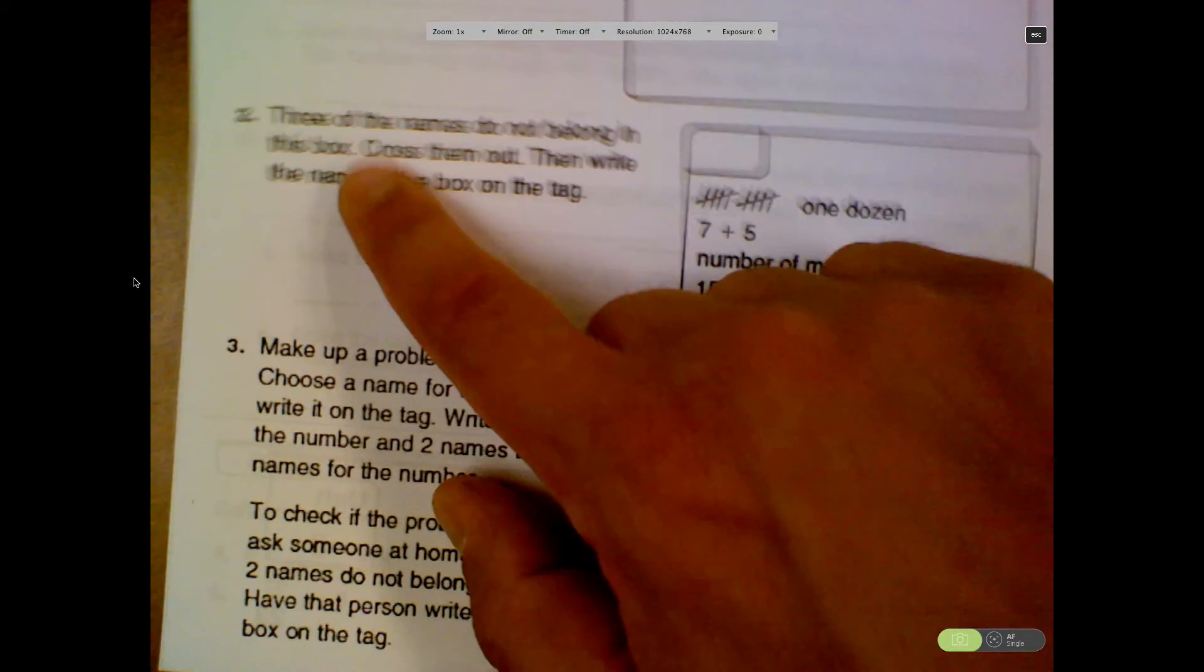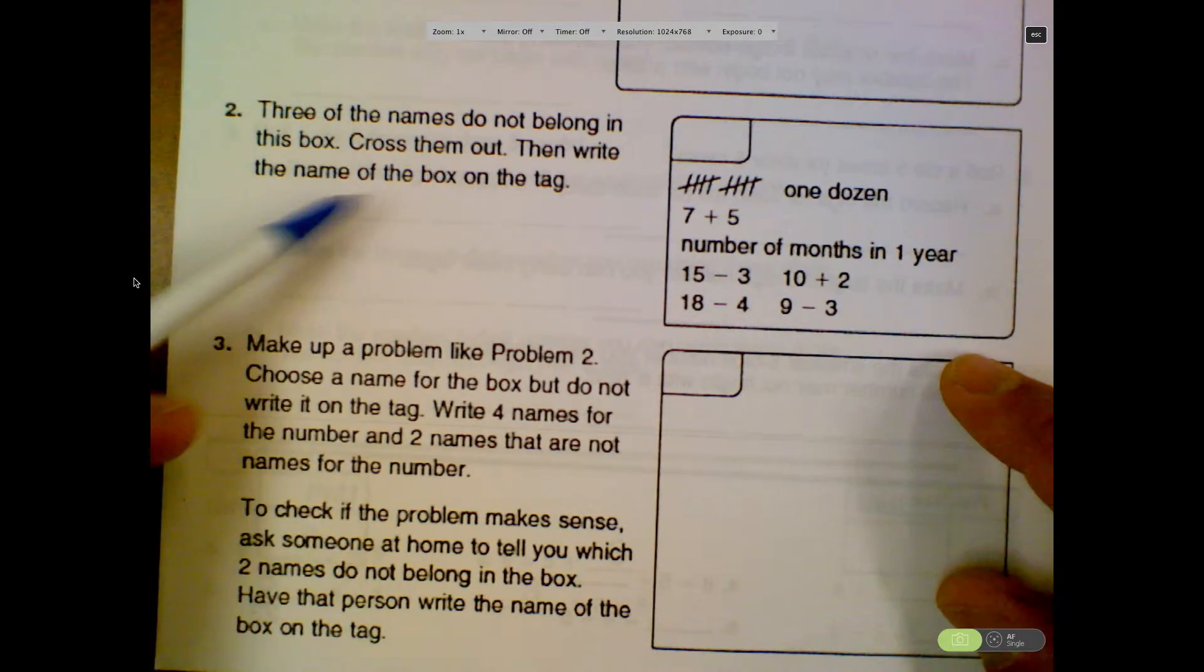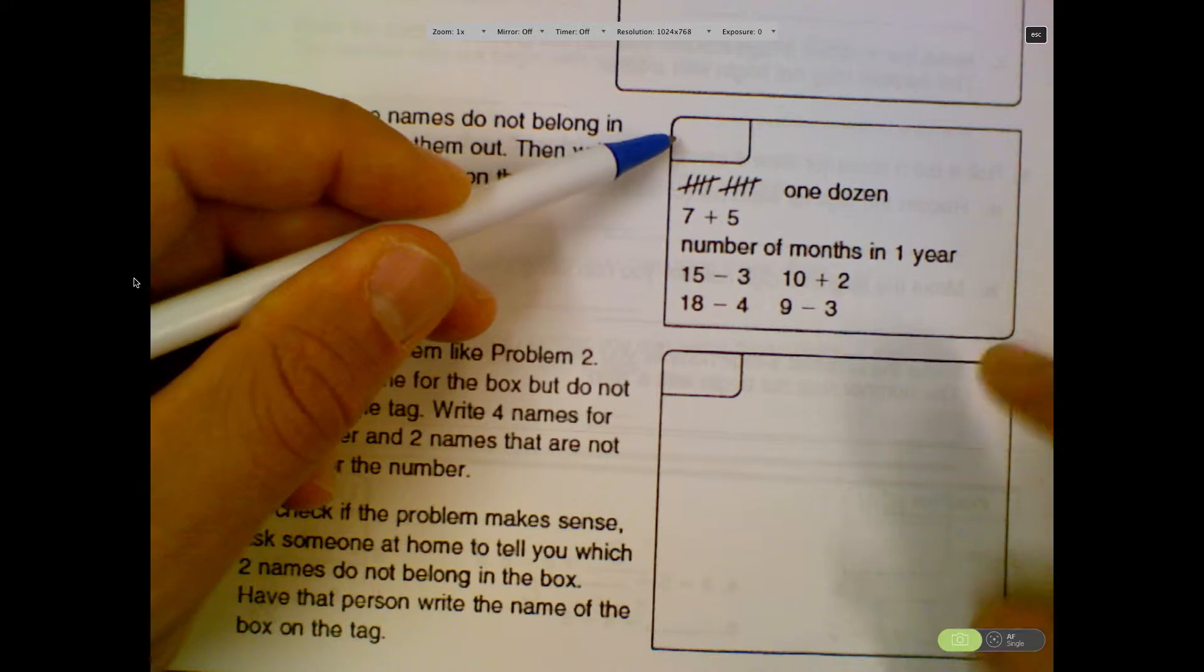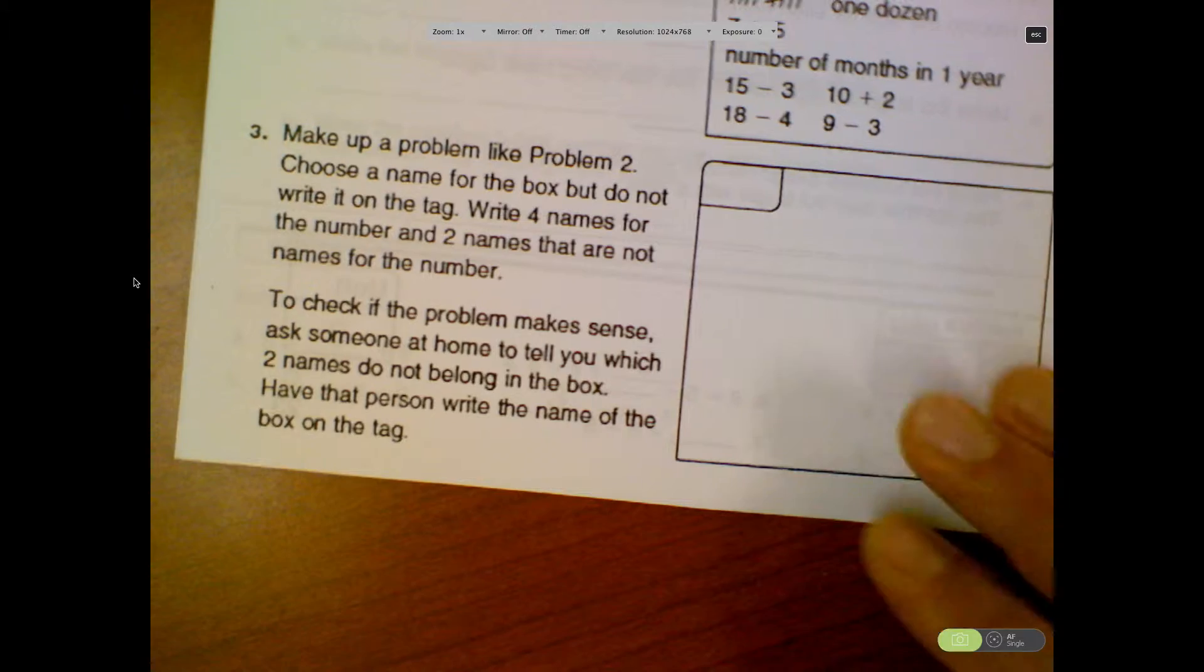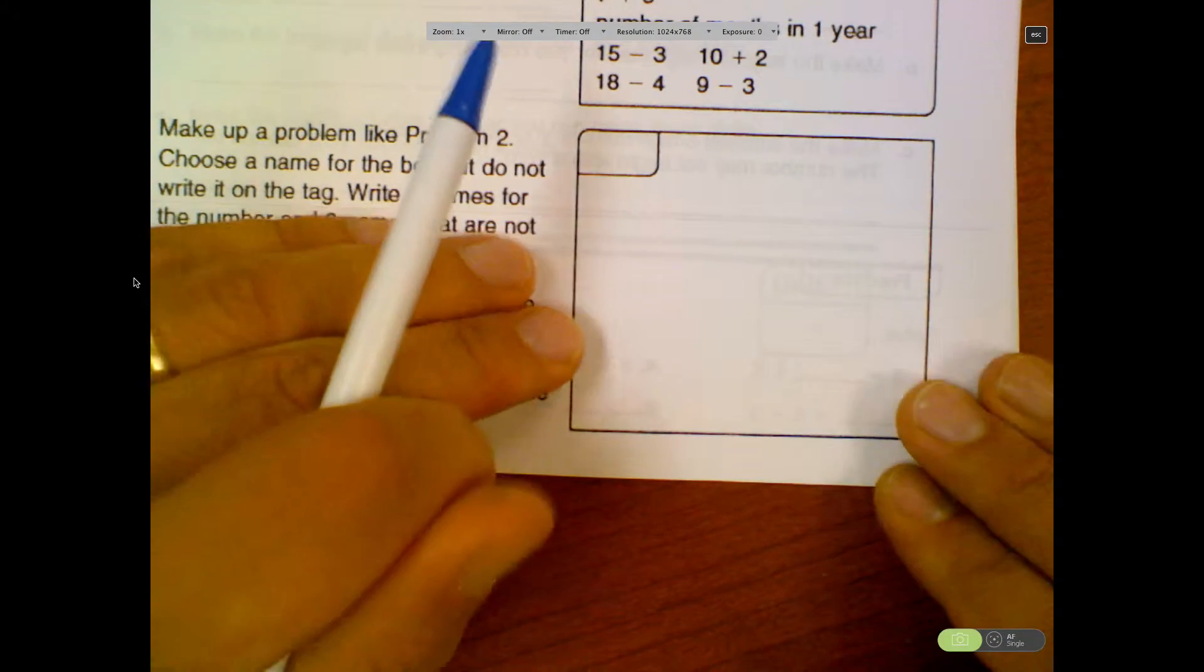Now on this one, it says three of these numbers do not belong in the box. You're going to cross those out. Then write the name that does belong in that box. Remember that one? There's three that don't fit. We crossed them out. We did this. And then down here, it says make up a problem like that, and then check with someone that that problem makes sense. So that's the first page.